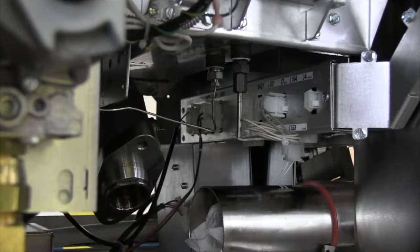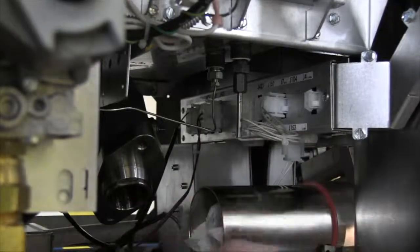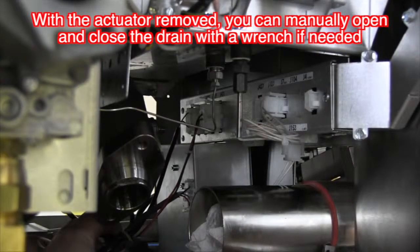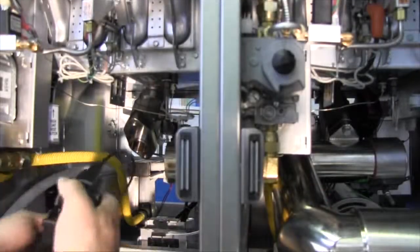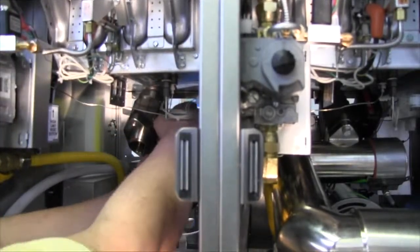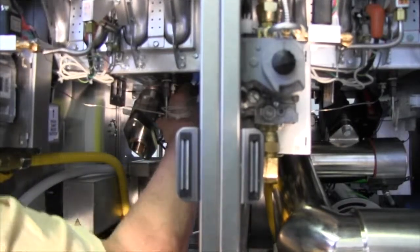It may be necessary to cut a few wire ties that hold the wiring in place from the drain actuator. Reinstall the repaired or new actuator in the reverse order. Slide the actuator over the drain stem and secure it by tightening the mounting screws.